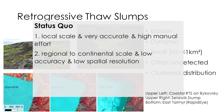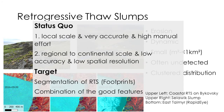On the other hand, there are studies that focus on regional to continental scales but they typically have lower accuracy due to low spatial resolution. Our target is to achieve segmentation of retrogressive thaw slumps — to get their footprints as polygons or raster masks — combining accurate results with little manual effort but on large spatial scales.